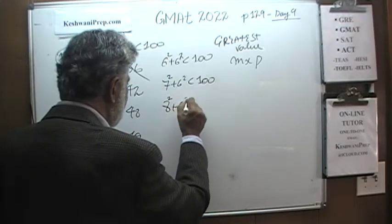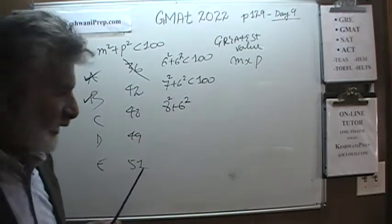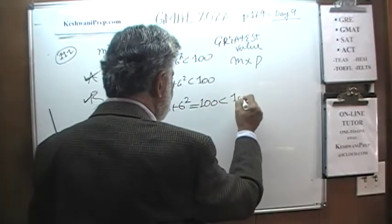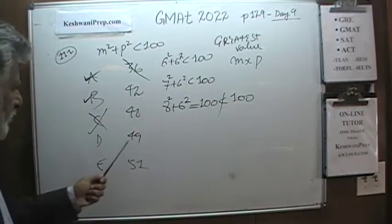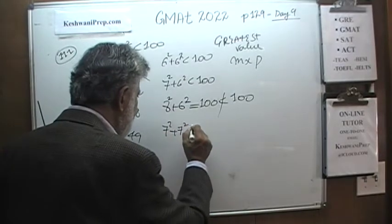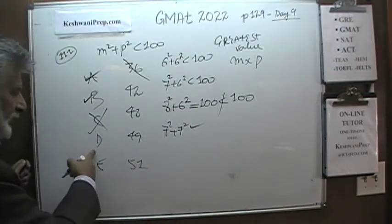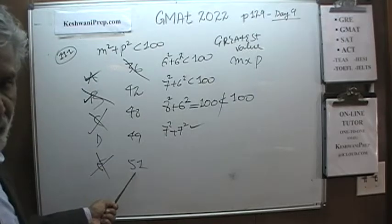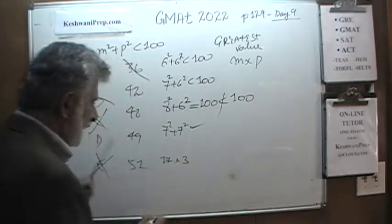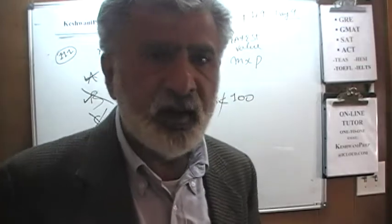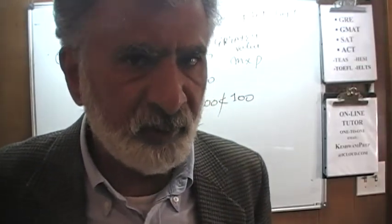For 48, that would be 8 times 6. But 8 squared plus 6 squared equals exactly 100, which is not less than 100, so C is not a contender. For 49, that is 7 times 7 — 7 squared plus 7 squared is less than 100, so 49 works. For E, 51 is 17 times 3, the only factorization, and 17 squared is more than 100, so that is impossible. The answer is 49.